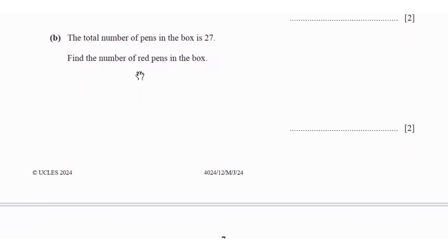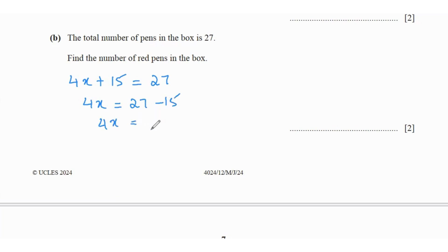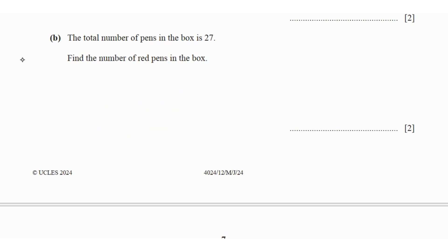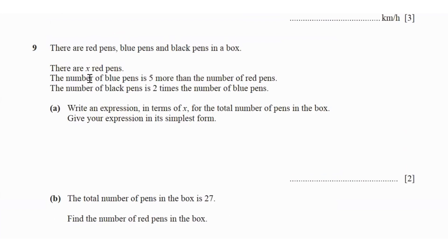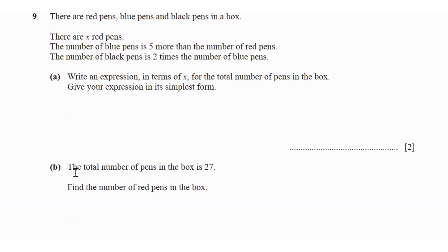The total number of pens is 27, so 4x + 15 = 27, giving 4x = 12 and x = 3. The number of red pens is 3. For this question, translate each statement into an expression. Remember: '2 times' means multiply; '5 more' means add — these are your keywords.